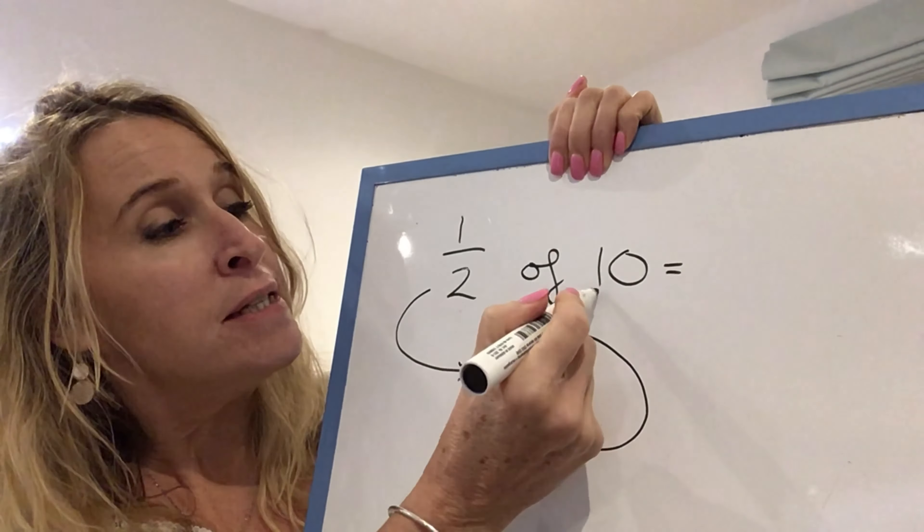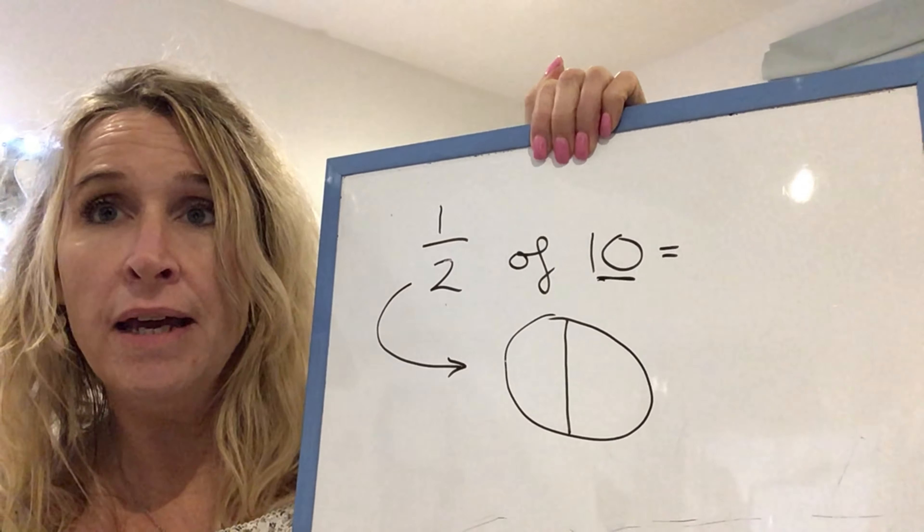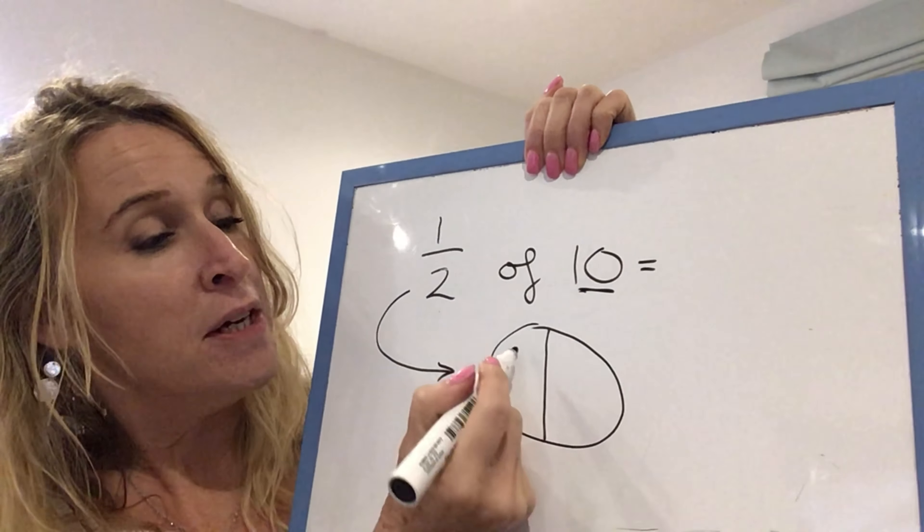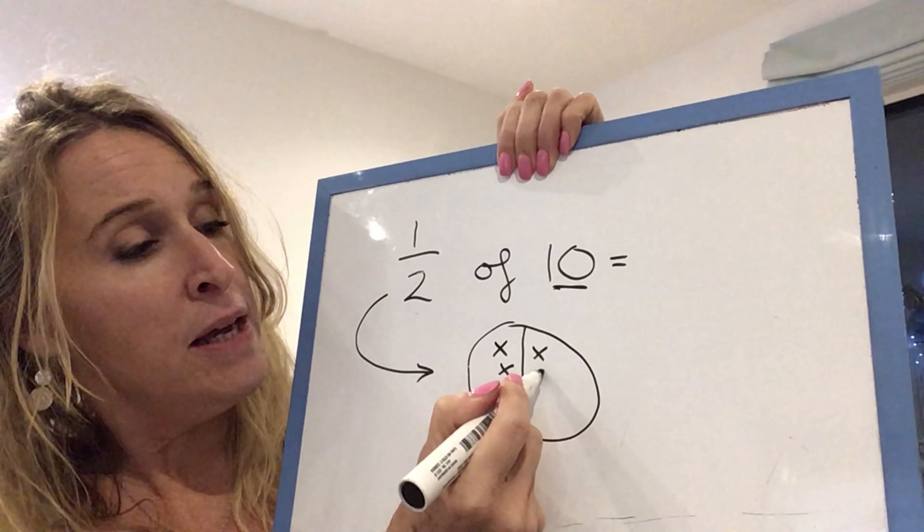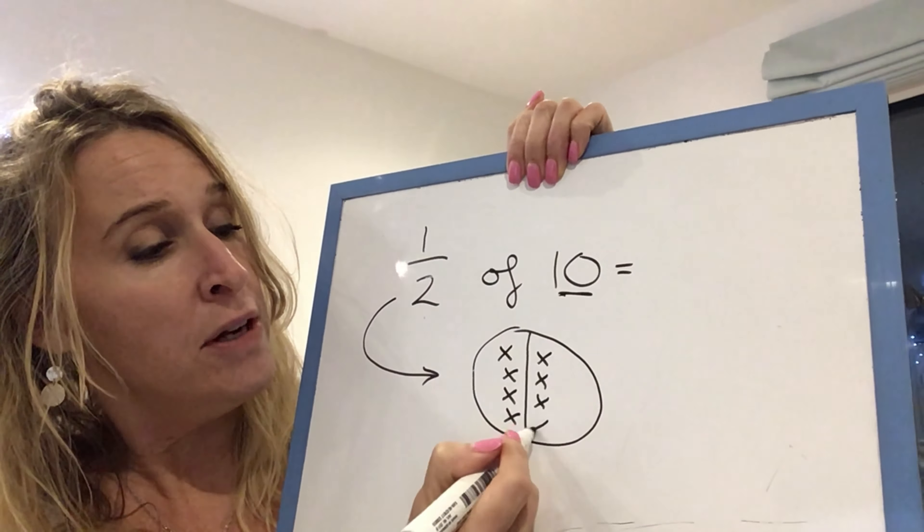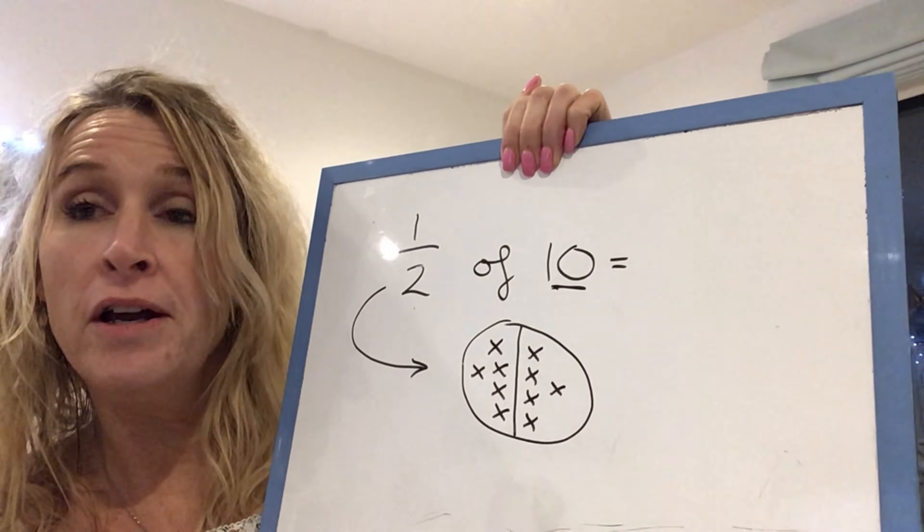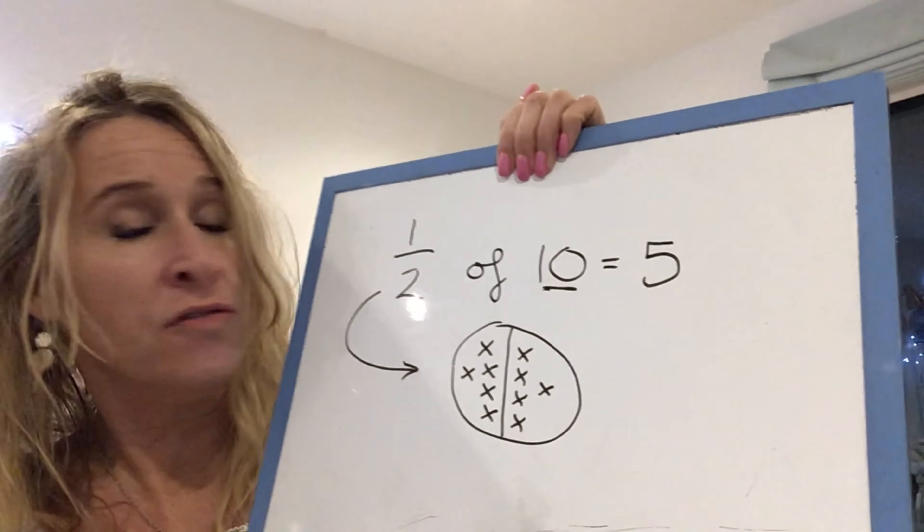And then I'm going to take the number 10 and I'm going to share it out equally between the two halves. So I'm going to use crosses. One, two, three, four, five, six, seven, eight, nine, ten. So a half of 10 would mean there would be five crosses on each half. So a half of 10 is five.